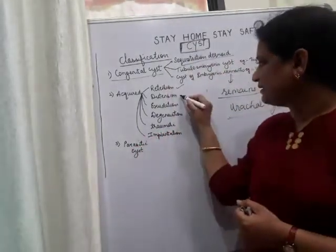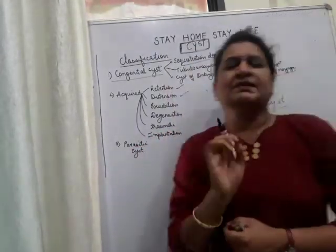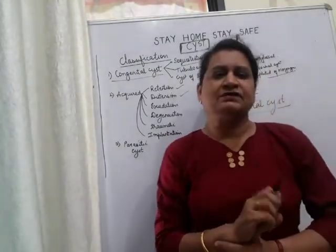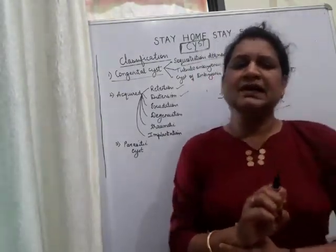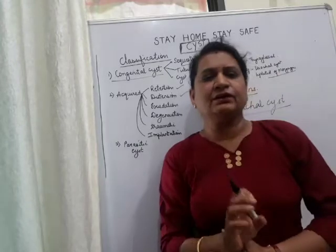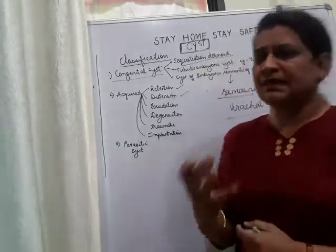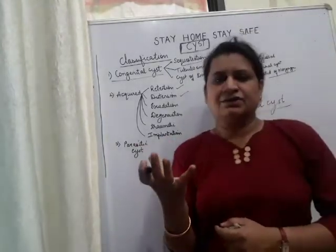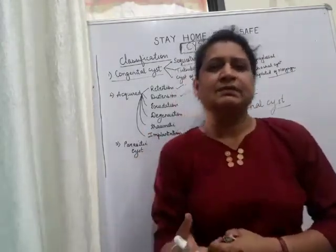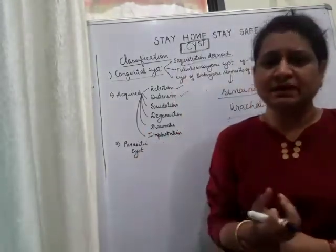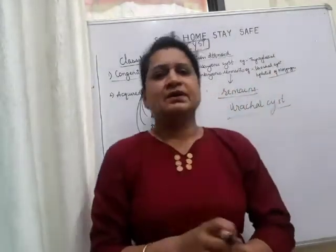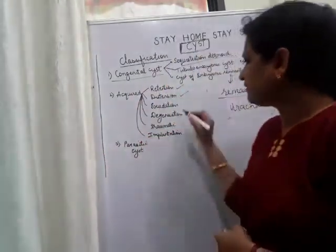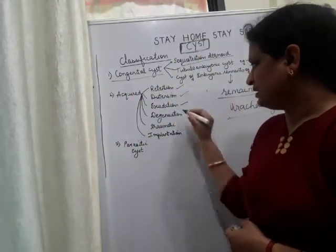The second type of acquired cyst is the distention cyst. These occur because of dilatation of normal acini or follicles — the normal acini or follicles undergo dilatation. The best examples are ovarian follicular cyst and thyroid cyst.